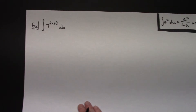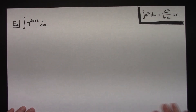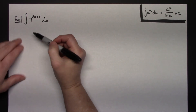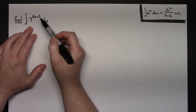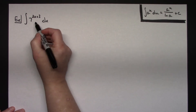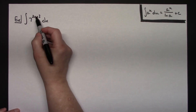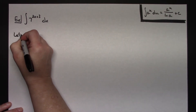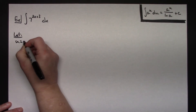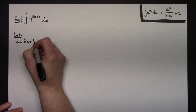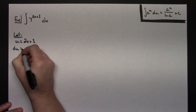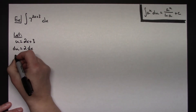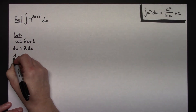Now let's take a look at the second formula where we're integrating a constant raised to some function of x. There's my constant and there's my function of x. I'm still going to use u substitution, letting u be my exponent. So I'm going to let u equal 2x plus 3. Then my du will be 2 dx, and solving for dx gives me du over 2.